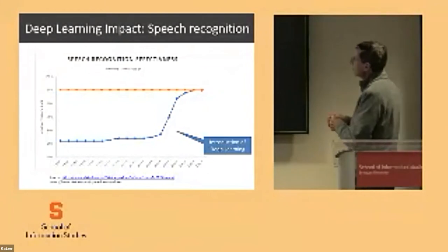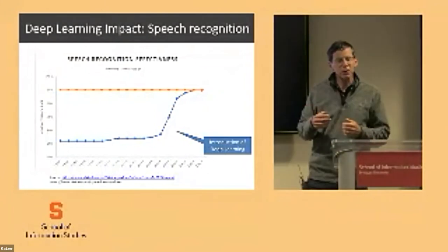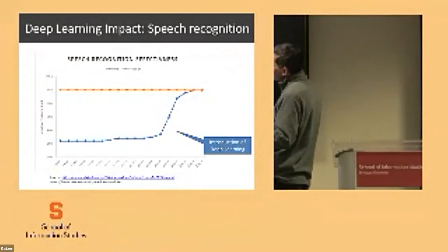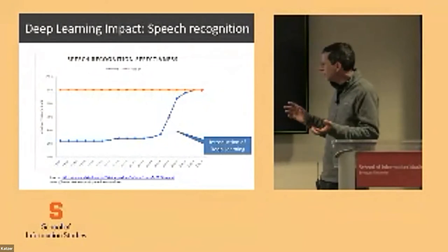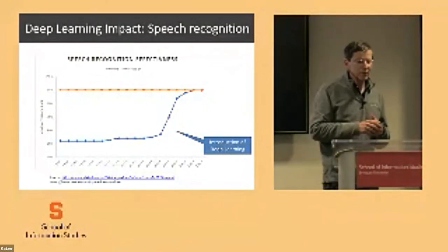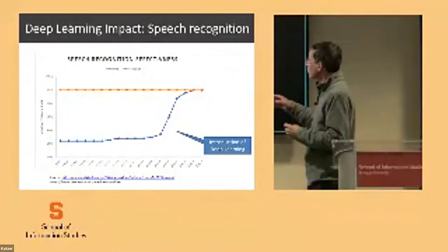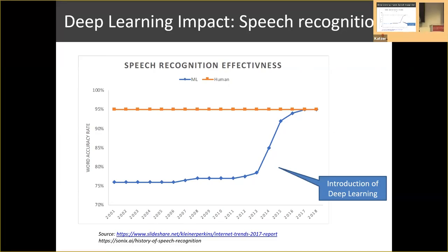This slide talks about how effective deep learning is for understanding speech. From roughly 2001 to roughly 2013, there really wasn't a huge change — humans could be much better than computers. Then deep learning was introduced over a two or three year period and very quickly became as good as humans. Now machine learning algorithms are actually slightly better than humans at understanding speech. So Alexa or 'Hey Google' is really good — better than if you just listened yourself.